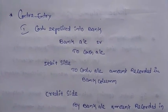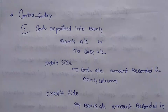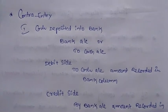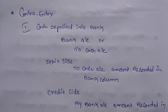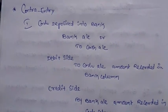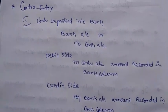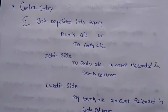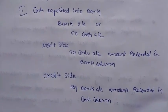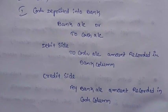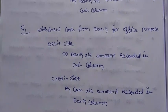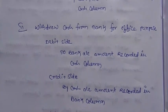A very important point in the Three Column Cash Book is the contra entry. Contra entry appears in two cases. First, cash deposited into bank: the entry is bank account debit to cash account. Write on the debit side 'To Cash' — amount recorded in the bank column. On the credit side 'By Bank' — amount recorded in the cash column. Second, withdraw cash from bank for office purpose only.